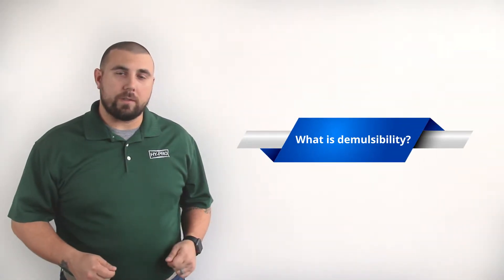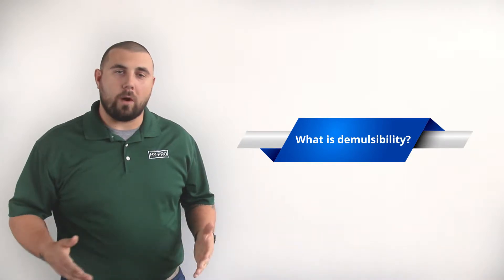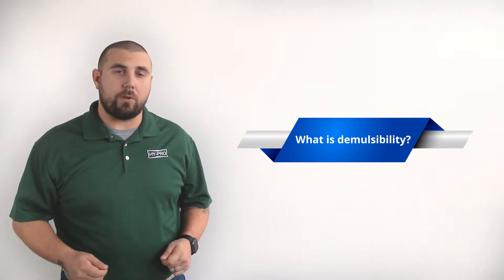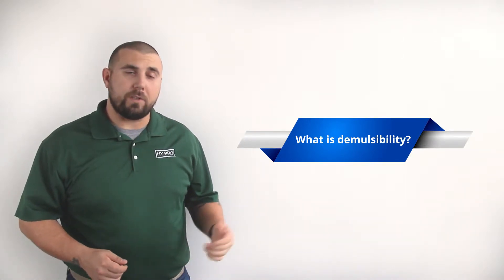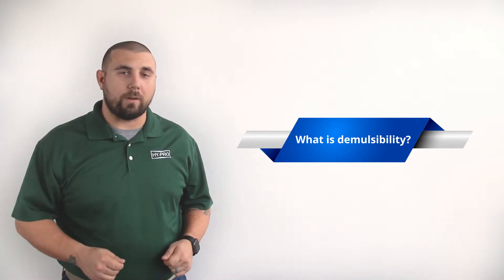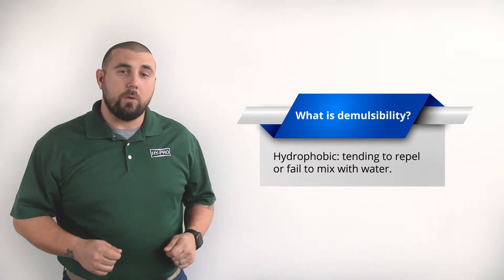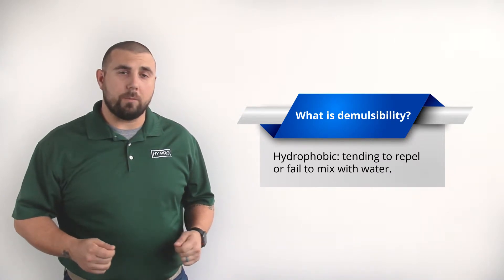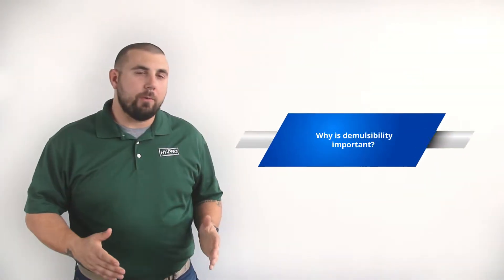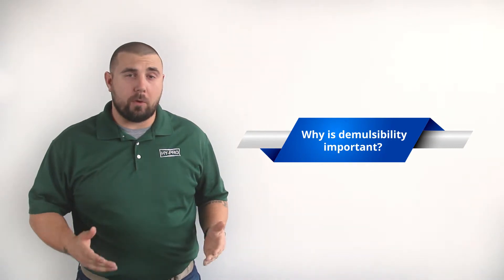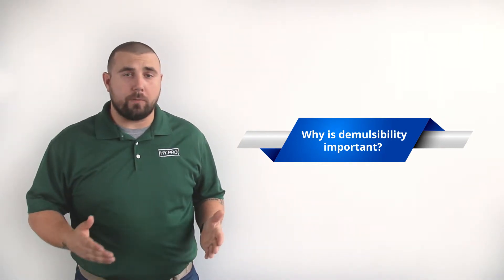Demulcibility is the ability of oil to separate from water. Oil and water naturally separate because like molecules attract each other. Oil sticks with oil, water sticks with water. Oil is hydrophobic or afraid of water, which is a benefit when it comes to fluids like turbine oil. So oil has a characteristic of demulcibility. It naturally separates from water.